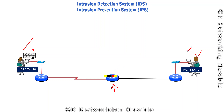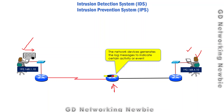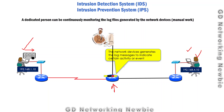For that, network devices like this router can be configured to generate log messages. These log messages indicate certain activity or events — so whatever activity or event is going on in the router, log messages will be generated. We can configure this router to send those log messages to a terminal where a dedicated network administrator will be continuously monitoring these log files to find hints about any suspicious activity going on in the network.